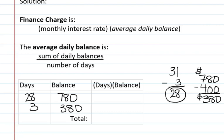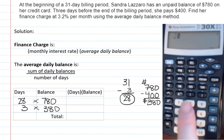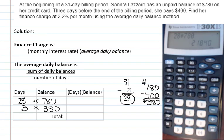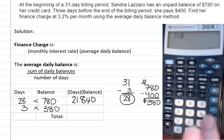So again, instead of adding up 28 times 780, we're going to multiply the days times the balance. And the same thing for the three days where she has a balance of 380. So let's see, we're going to have 28 times 780 is 21,840. And then we're going to have three times 380 is going to be 1,140.